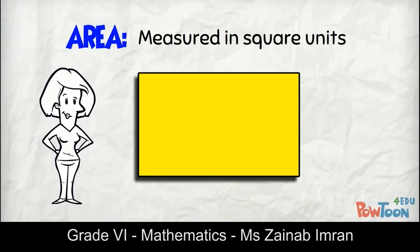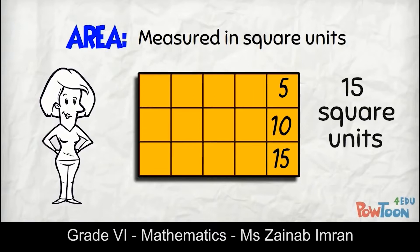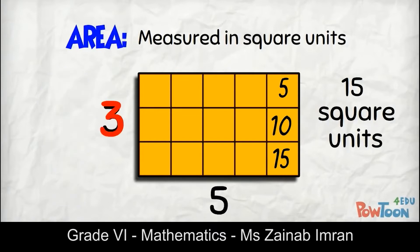Area is measured in square units, so let's divide this rectangle up into square units and find out how many it has. 5, 10, 15. 15 square units. We have 3 rows of 5. 3 times 5 is 15.